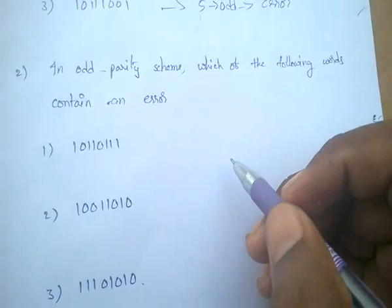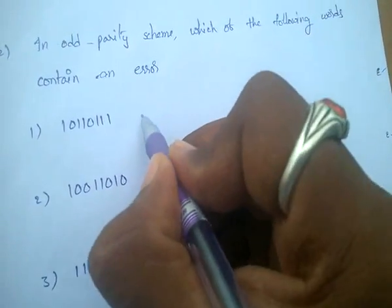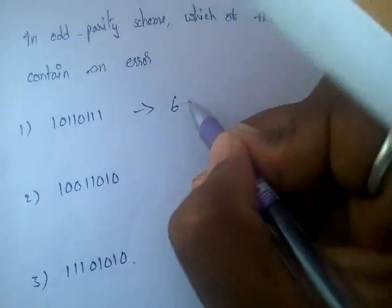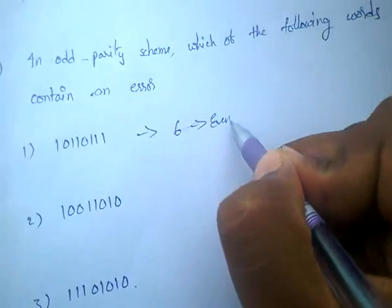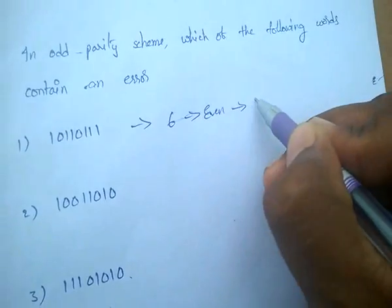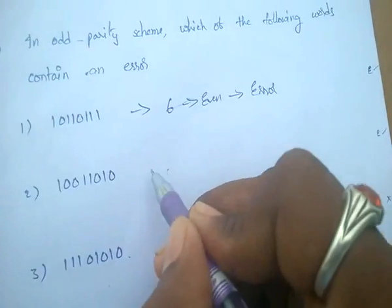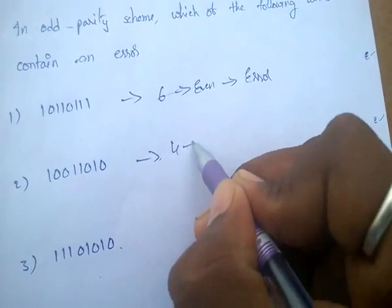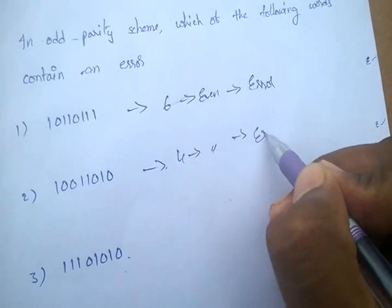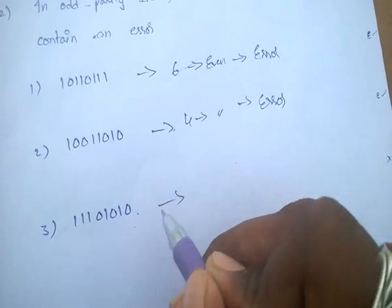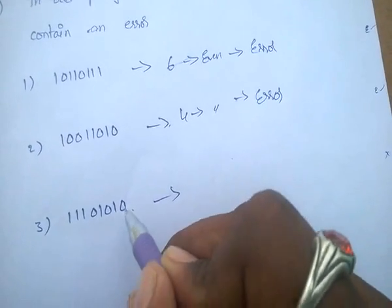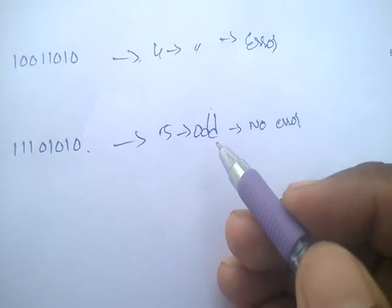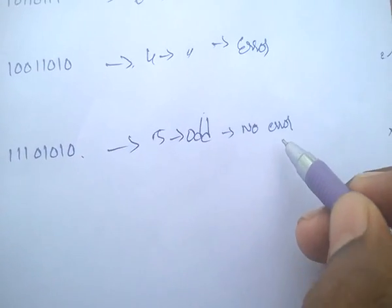For odd parity scheme, which of the following contains an error? Here: 3, 4, 5, 6 — even means error for odd parity. Here: 1, 3, 4 — 4 means even, so it has error. Here: 3, 4, 5 — 5 means odd, so there is no error.